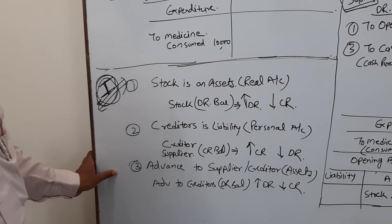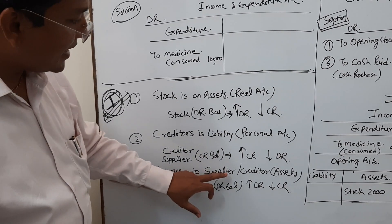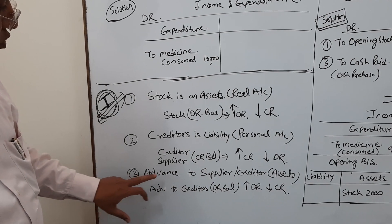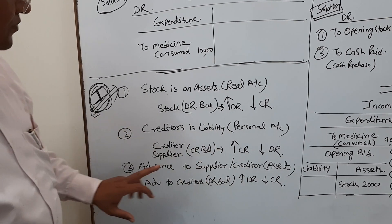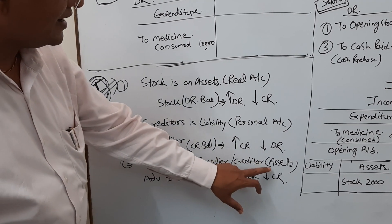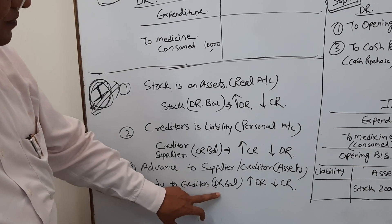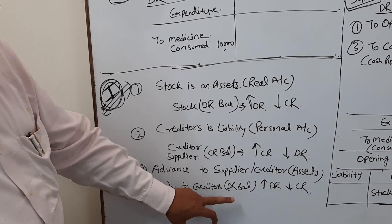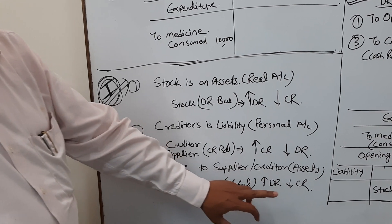Advance to supplier is again an asset. Assets have a debit balance — but a debit comes up with a credit on the opposite side.